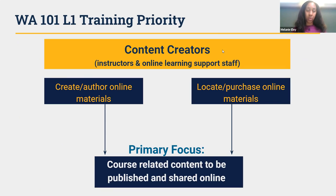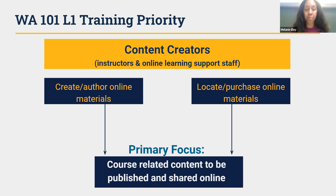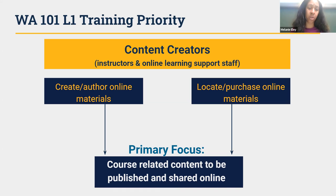When we talk about who should complete the training — with Level 1, that's your basic web accessibility focus. Pretty much anyone who's creating content that will be shared online will certainly benefit from this Level 1 section. But at this point, when we think about who would be a priority, we really want to focus on content creators who are basically creating course-related content that's going to be shared and published online. Those would specifically be our instructors and staff who are supporting online learning — folks who are creating or authoring online materials, or locating and purchasing online materials that would be shared through an online course.